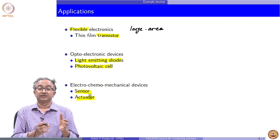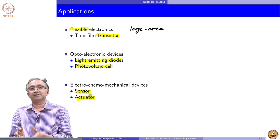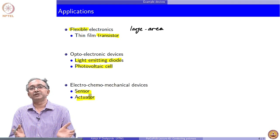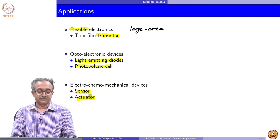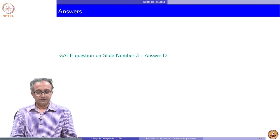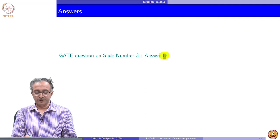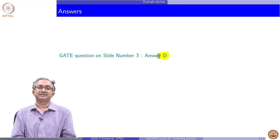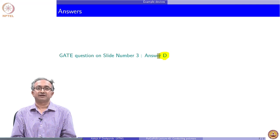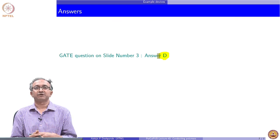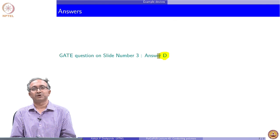Conducting polymers are a very interesting new area with lots of applications in many devices, ranging from electronic devices to soft robotic applications. Most of the polymers listed in the question are in fact insulating polymers — it is only polypyrrole with doping that can conduct electricity. With this we will close this lecture, and in the next couple of lectures we will look at the dielectric response of polymeric materials. Thank you.